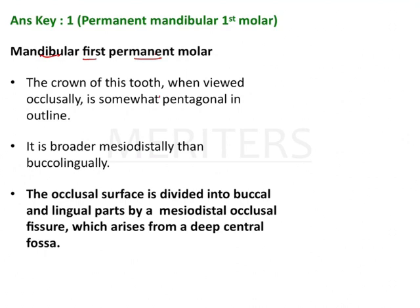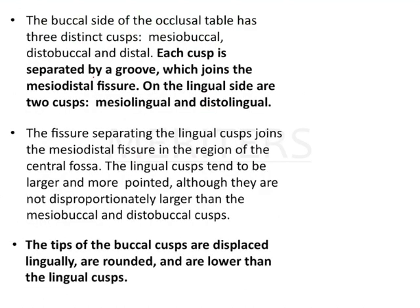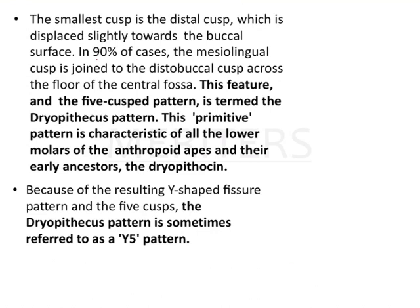The crown of the mandibular first permanent molar, when viewed occlusally, is pentagonal in shape. There are buccal and lingual parts divided by a fissure or central groove. Each cusp is separated by a groove joining the mesiolingual fissure. The tips of the buccal cusps are displaced lingually, are rounded, and are lower than the lingual cusps.